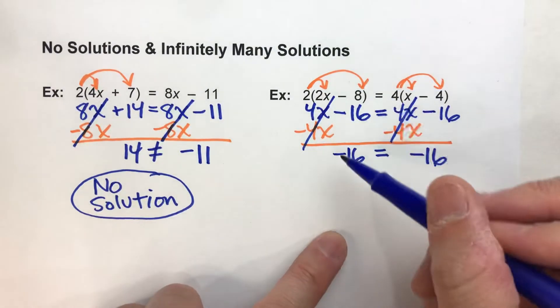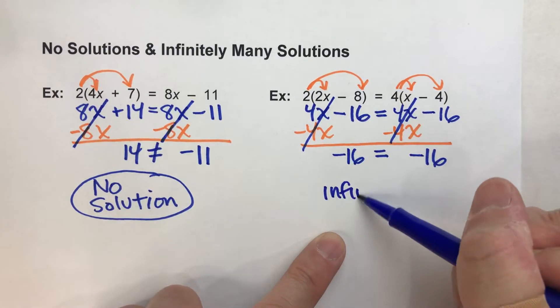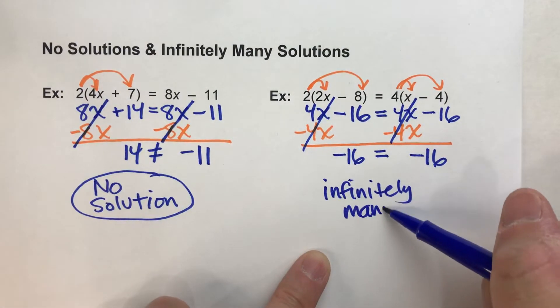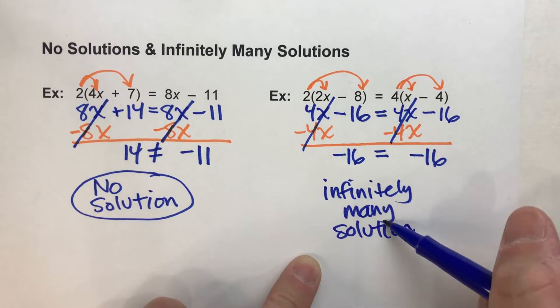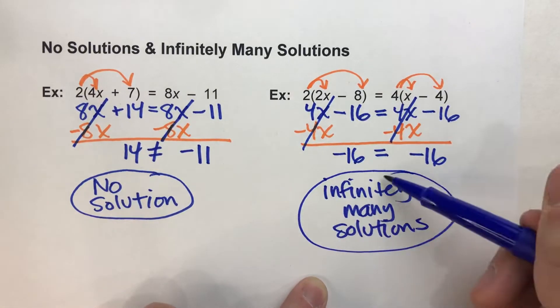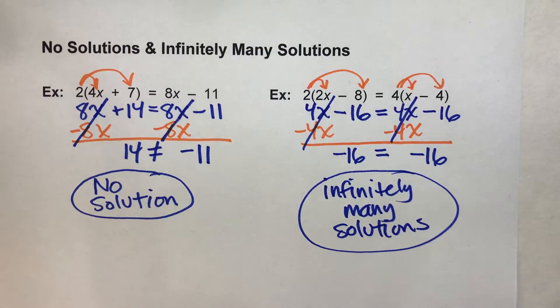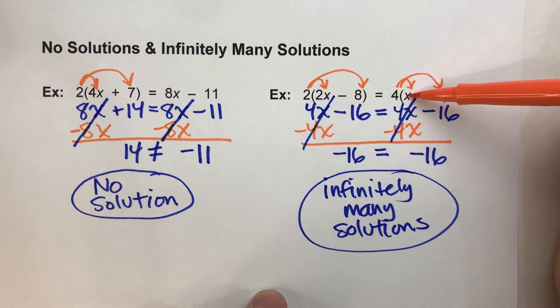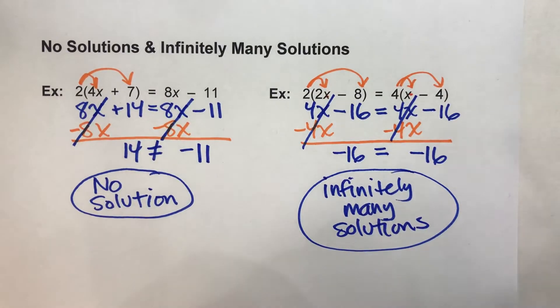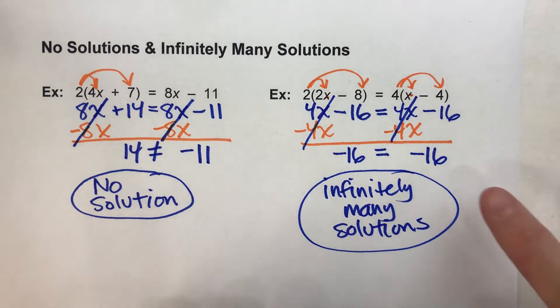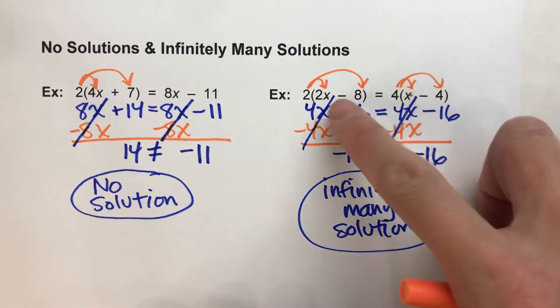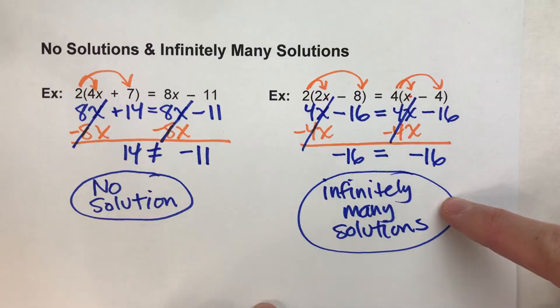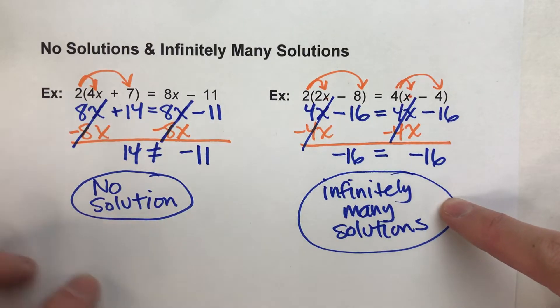What that tells us is there are infinitely many solutions. In other words, any number we stick in for x here and here will make this equation work. Any number. Like we could stick any number in for x, and this side will automatically equal that side. And that's what infinitely many solutions means.